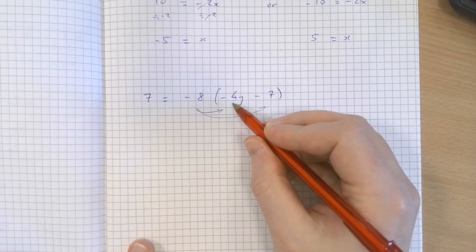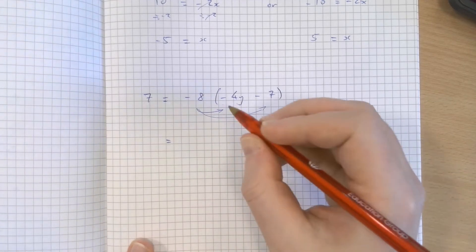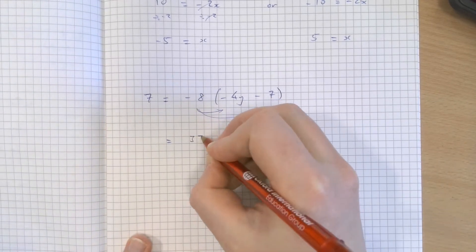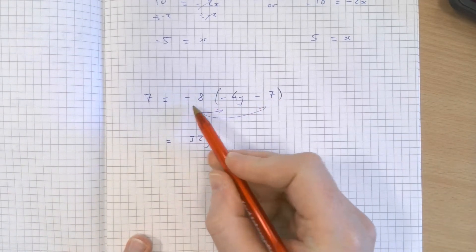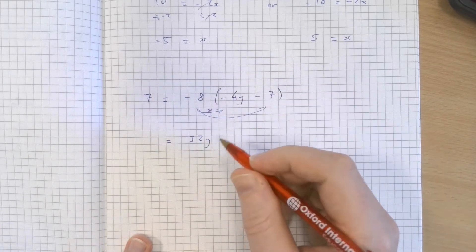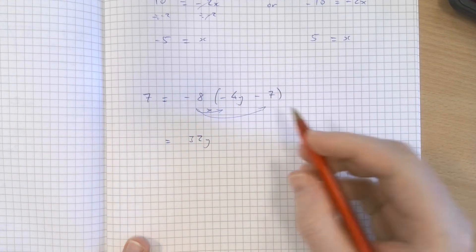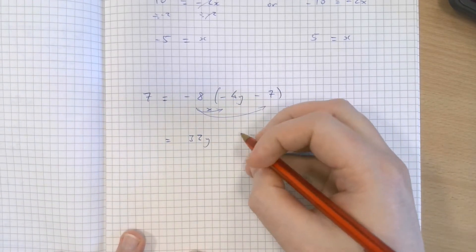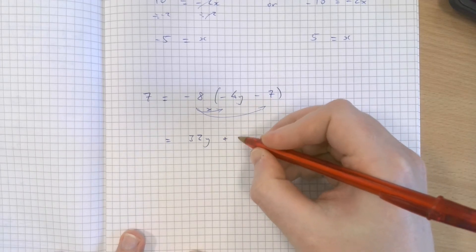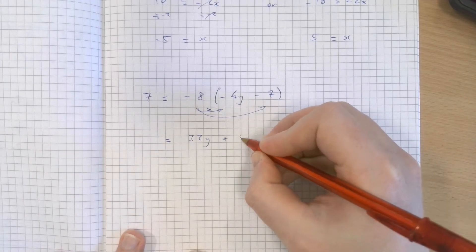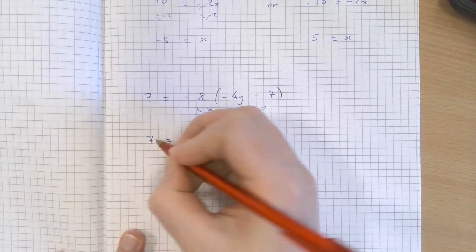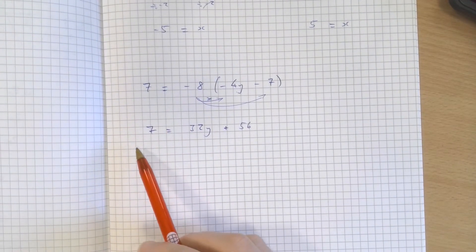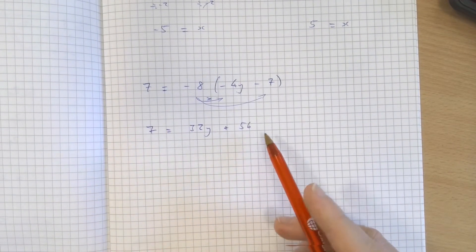Negative 8 times negative 4y—8 times 4, that's 32y. And the two negatives, when two negatives are multiplied together, they become positive. Similarly, negative 8 times negative 7 will also make positive, and 8 times 7 is 56. So having expanded out that bracket, 7 equals 32y plus 56.